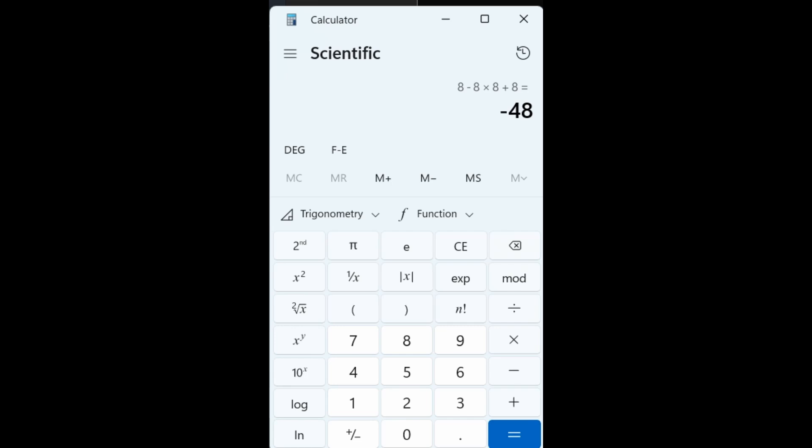But a lot of people will use the wrong type of calculator. They'll use one that does immediate execution mode. Those calculators, what they rely on is they rely on you understanding the order of operations. They rely on you doing the multiplication or division before you do the addition and subtraction.